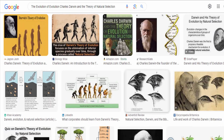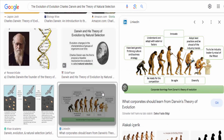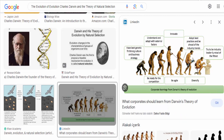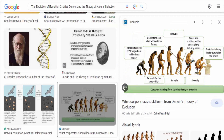Charles Darwin, an English naturalist, developed his theory of natural selection during his famous voyage on the HMS Beagle from 1831 to 1836. He observed various species and collected specimens from around the world, which provided him with crucial evidence for his theory.